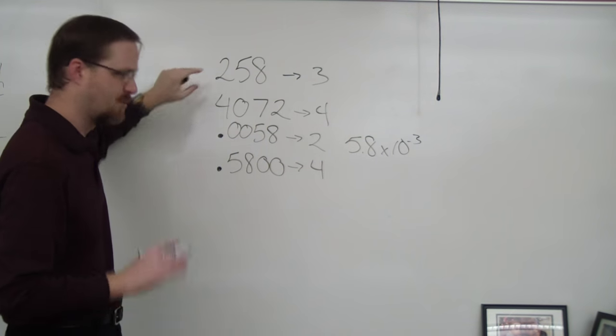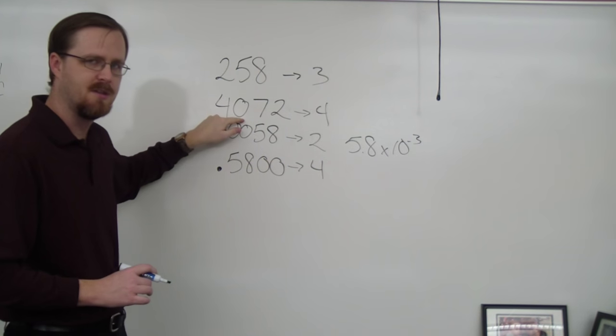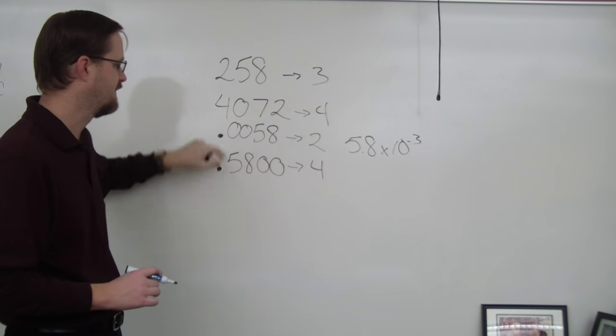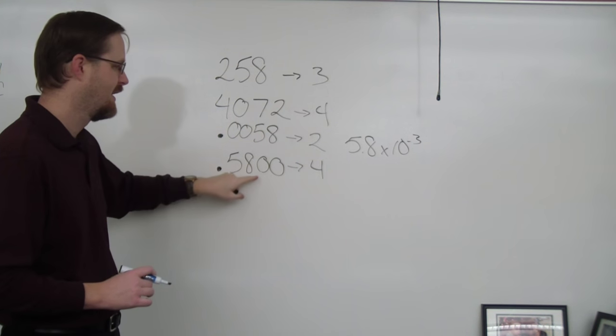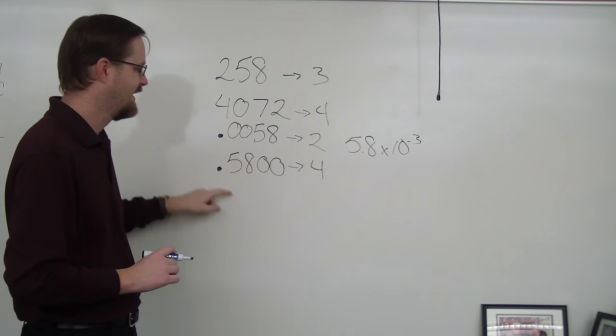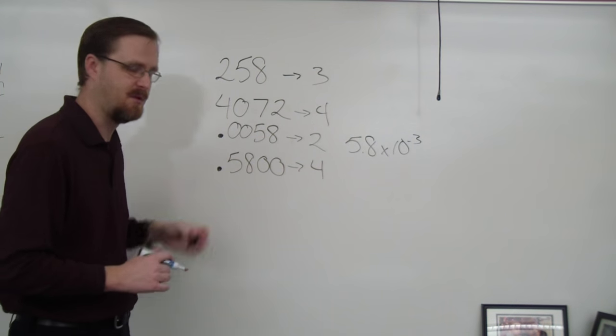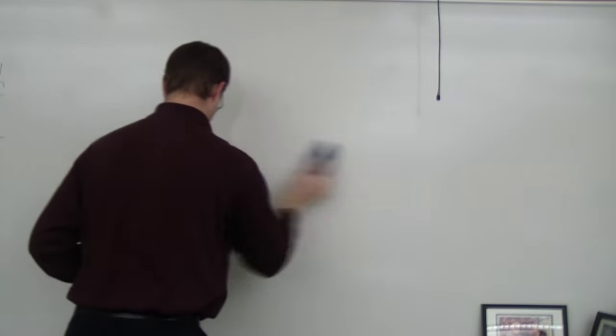So to recap, all non-zero digits count, middle zeros always count, leading zeros never count, and trailing zeros only count if there is a decimal present. So let me show you what that actually means.